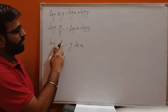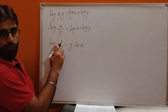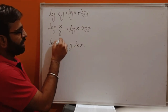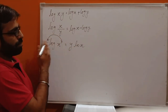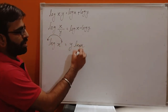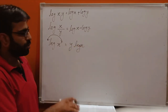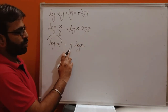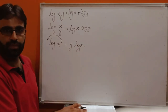If we have a power like y — it may be like 2 or 3 — it is brought before the log. So the value is y·log x. So log x to the power y is equal to y·log x.